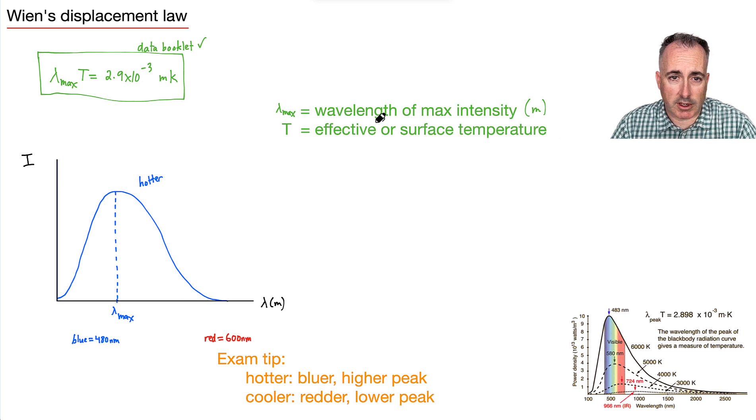So the wavelength of a light in meters. And so the wavelength of the max intensity, we're going to measure that in meters. The temperature, that's going to be t. It's going to be the effective, or what we call the surface temperature. That'll be measured in Kelvin, for example.